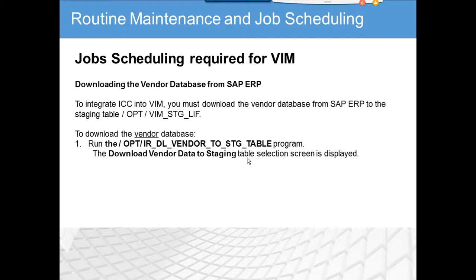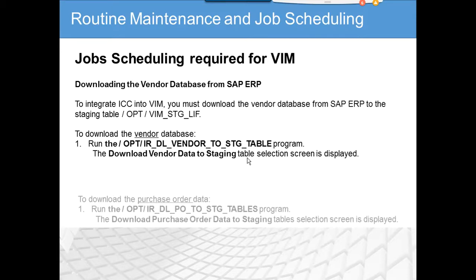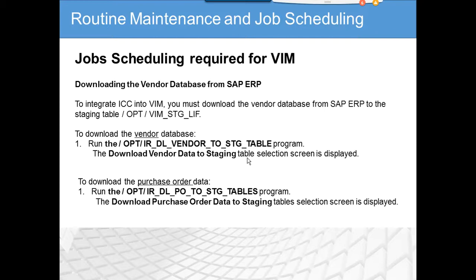The vendor data download program needs to be scheduled once a day. You should exclude employee vendors because those contain confidential information such as social security numbers — exclude those vendor groups from the selection. You can filter using vendor groups.